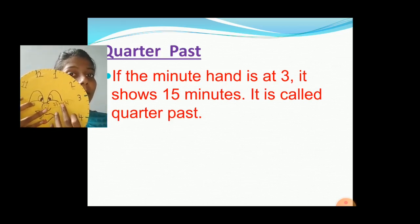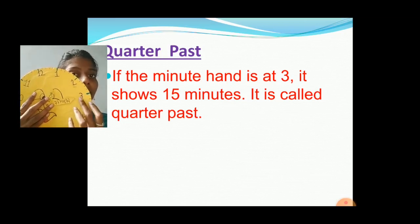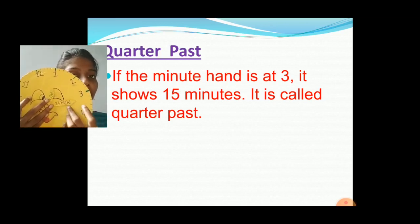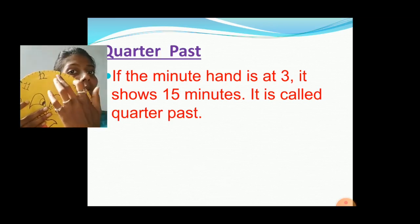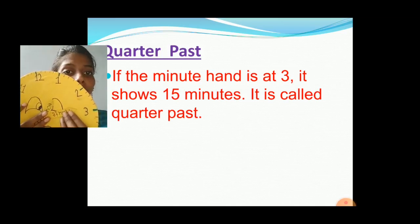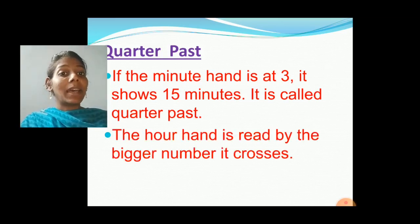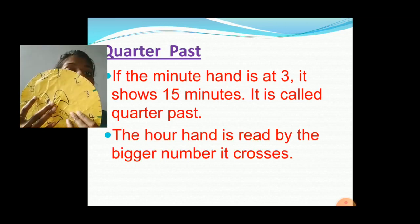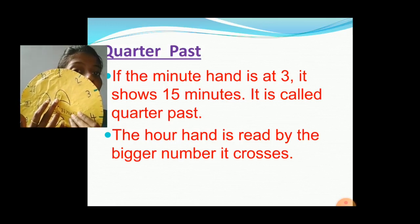When the minute hand is at number 3 and the hour hand is at number 1, so it is 1 hour 15 minutes, correct? It is 1 hour 15 minutes or quarter past 1. Instead of 15 minutes, we can say quarter past 1. So the hour hand is read by the bigger number it crosses.